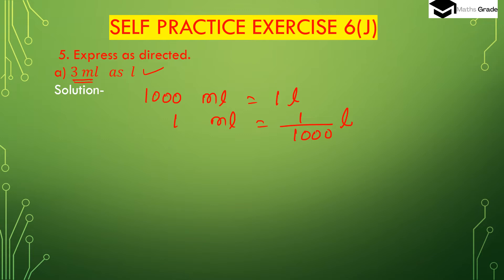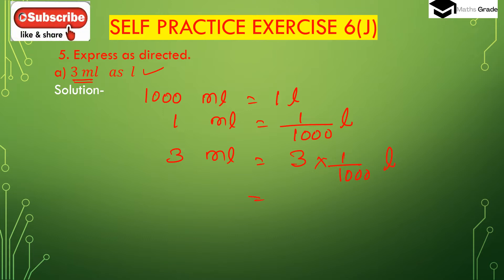Here it is given 3 ml, so we have to convert 3 ml to liter. 3 ml will be 3 multiplied by 1 divided by 1000 liter, that is 3 divided by 1000. In the denominator 1000 has 3 zeros, and in the numerator only 1 single digit 3, so we have to place 3 digits after the decimal place. We need 2 more zeros before digit 3, so it is 0.003 liter.